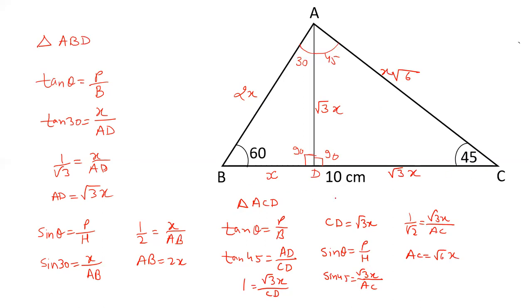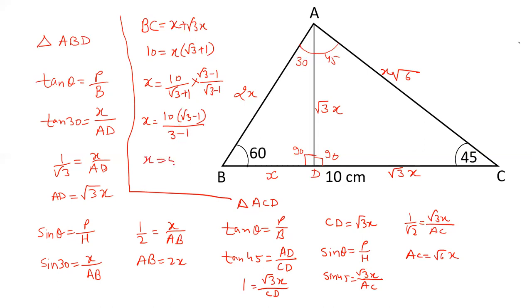BC length is 10 cm, so x plus root 3x equals 10. Factoring: x times (root 3 plus 1) equals 10. Therefore x equals 10 over (root 3 plus 1). Rationalizing by multiplying by (root 3 minus 1), we get x equals 5 times (root 3 minus 1).